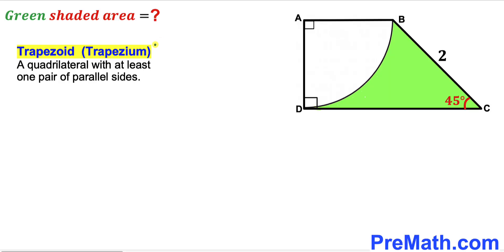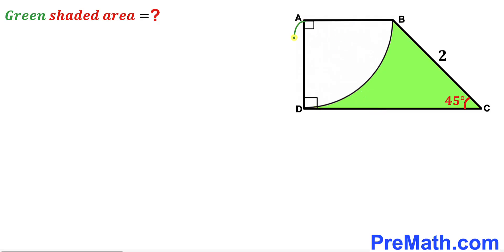Now let's recall the definition of a trapezoid — sometimes called a trapezium — a quadrilateral with at least one pair of parallel sides. We can see that angle A and angle ADC are both 90 degrees, so side AB is parallel to side CD. Therefore quadrilateral ABCD is indeed a trapezoid. I'm going to label radius AD as lowercase r, and likewise AB is also a radius of the same quarter circle, so it's labeled r as well.